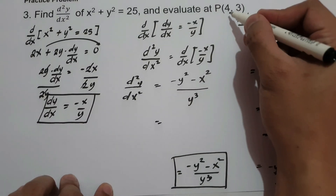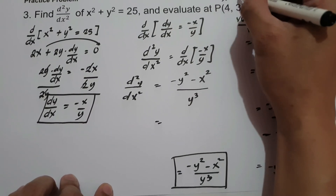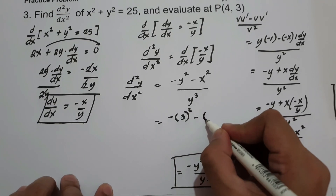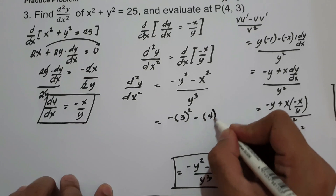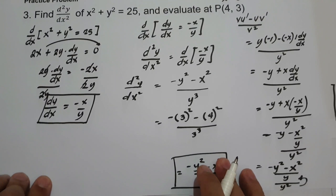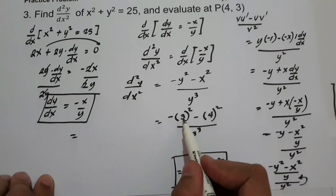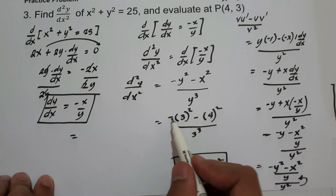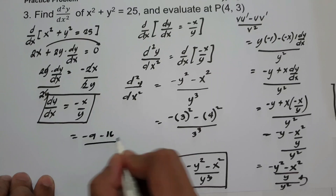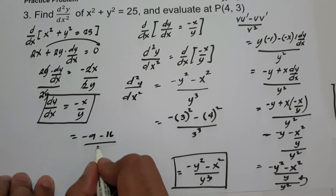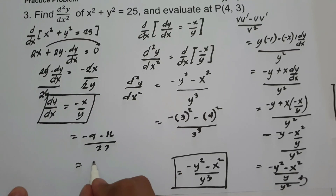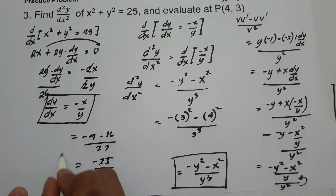Now let us substitute the values x equals 4 and y equals 3. We have negative 3 squared minus 4 squared, over 3 cubed. That is negative 9 minus 16, over 27. Negative 9 minus 16 is negative 25, over 27. So the answer is negative 25 over 27.